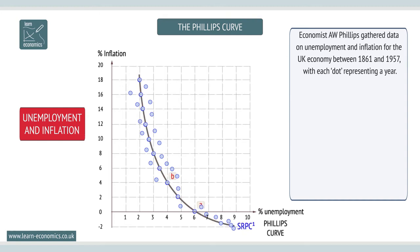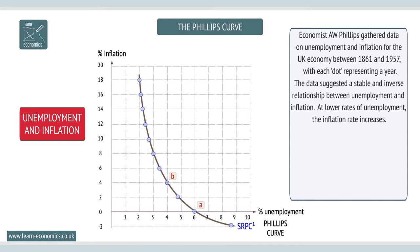So, what did the Phillips Curve show? When analysed, the data suggested a stable and inverse relationship between unemployment and inflation. At lower rates of unemployment, the inflation rate is higher.